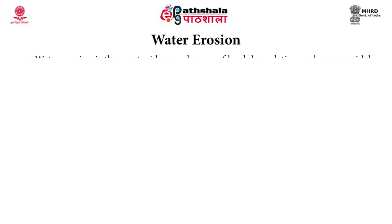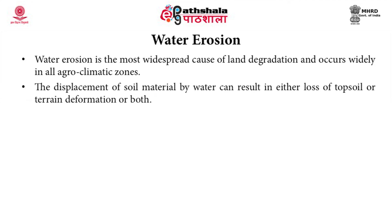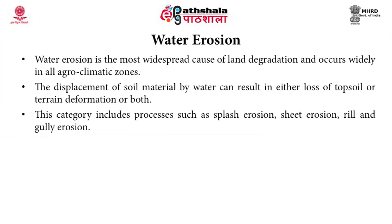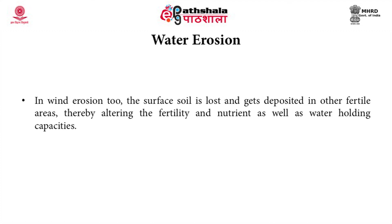The first cause is water erosion, which is the most widespread cause of land degradation and occurs widely in all agroclimatic zones. The displacement of soil material by water can result in either loss of topsoil or terrain deformation or both. This category includes processes such as splash erosion, sheet erosion, rill and gully erosion, resulting in loss of fertile topsoil and plant nutrients. In some cases where the subsoil has concords and lime nodules, it gets exposed on the top, thereby altering the pH regime of the surface soil and subsequent nutrient holding capacity and their availability to plants.